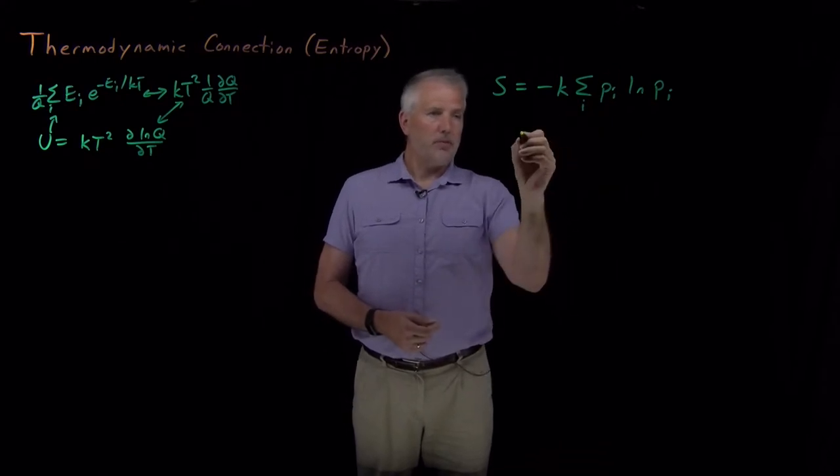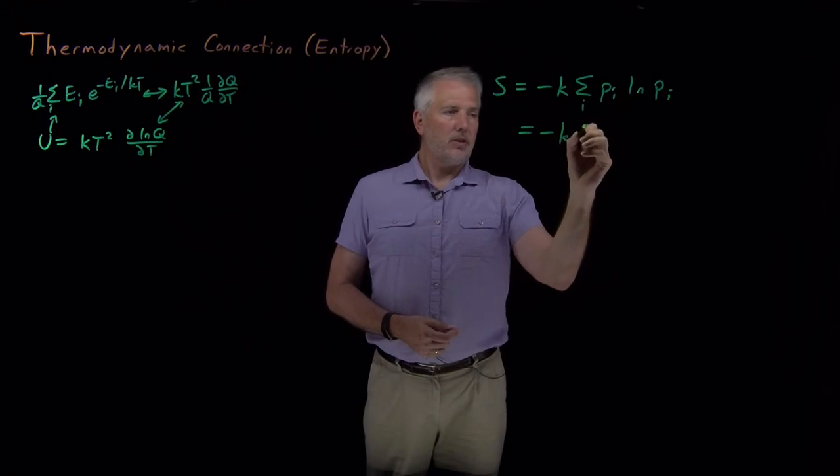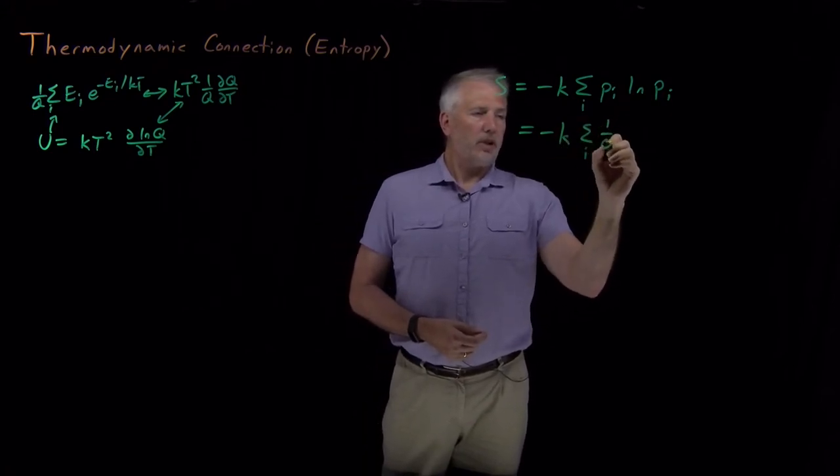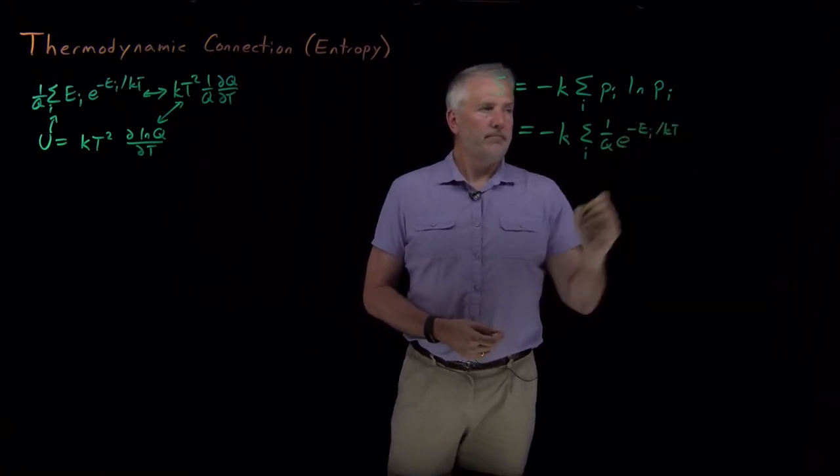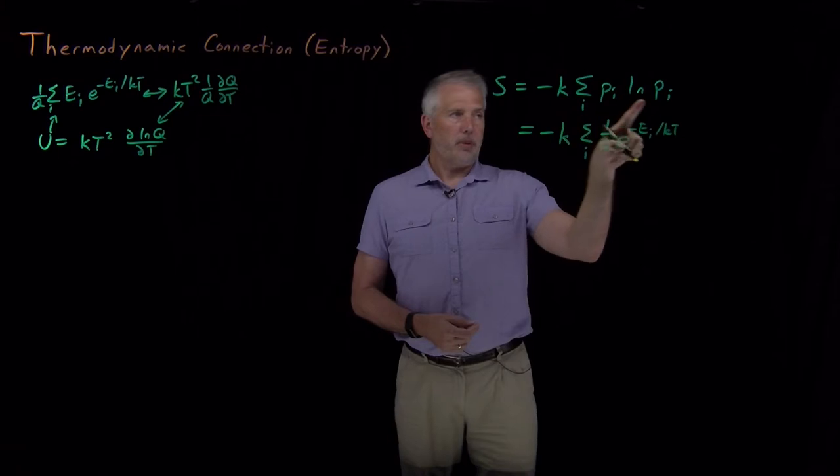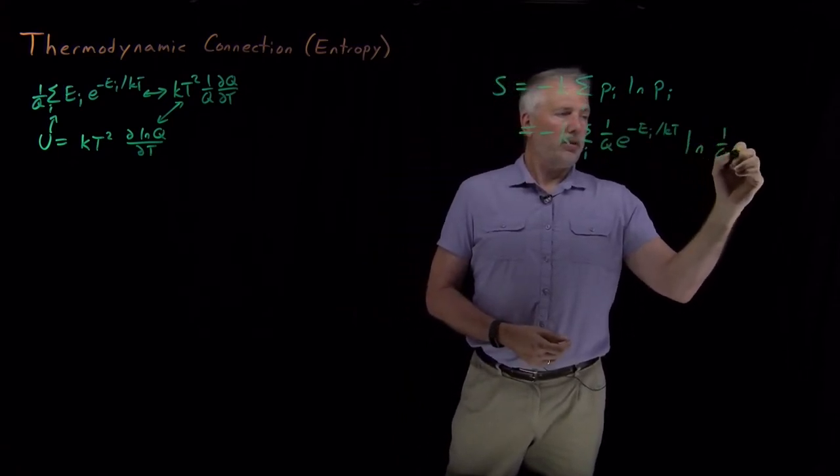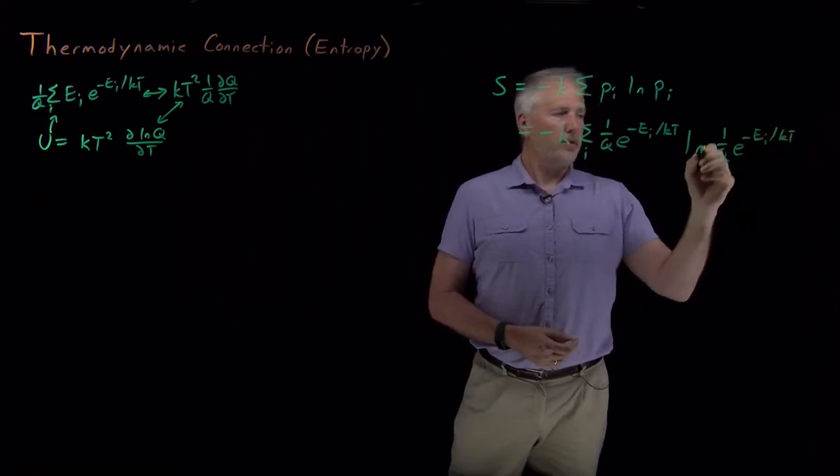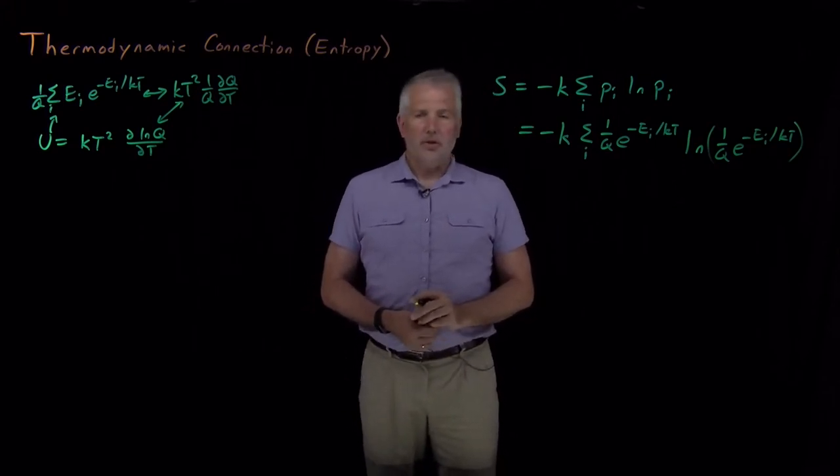Again, if we use Boltzmann to tell us what these probabilities are, this is going to look like the probabilities are 1 over q e to the minus energy over kT. The same thing is true for this probability as well as this probability. So I've got log of 1 over q e to the minus energy over kT. So it's log of that entire thing. So far, so good.